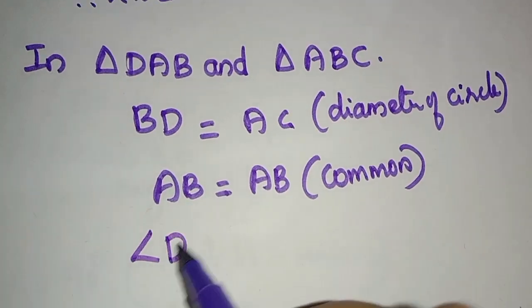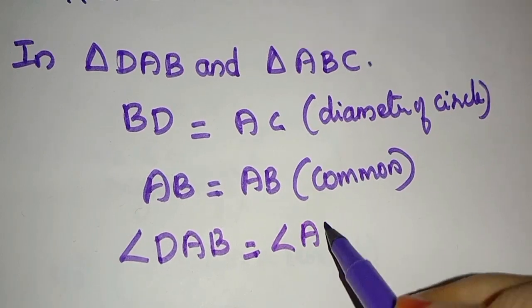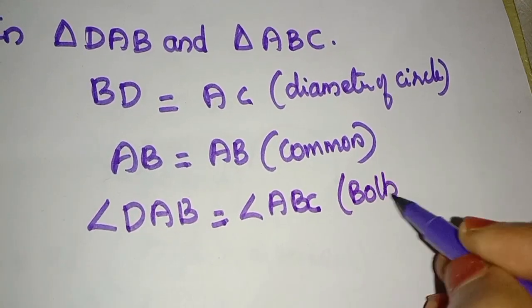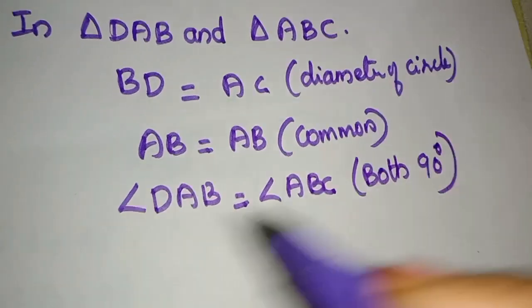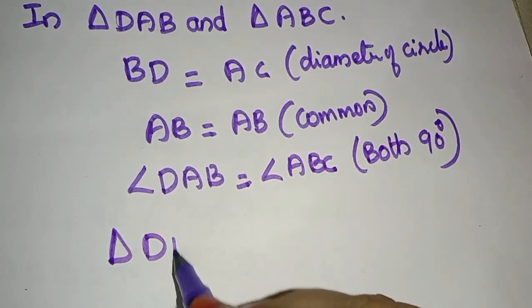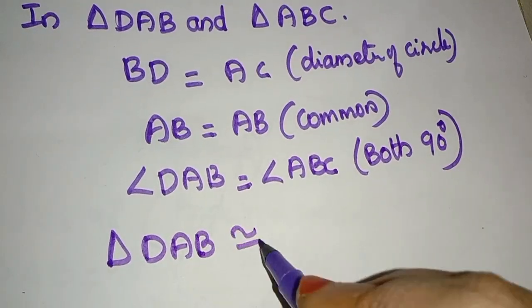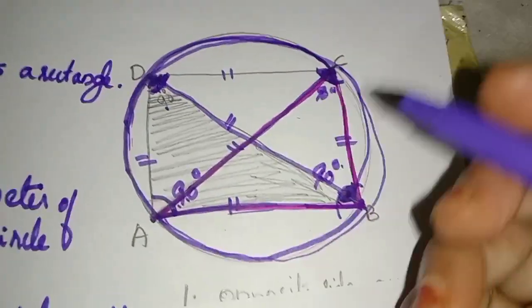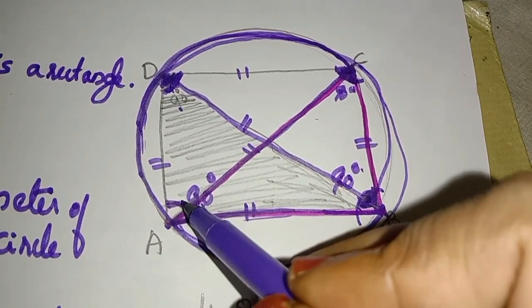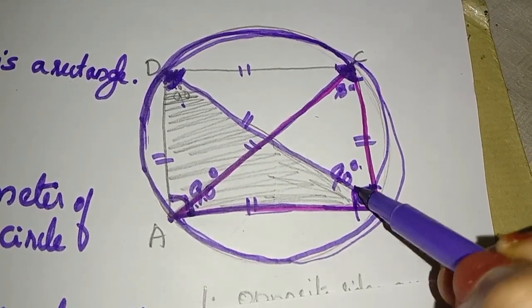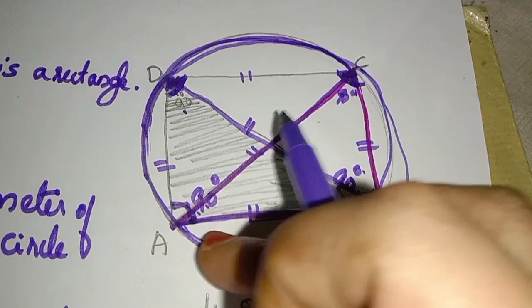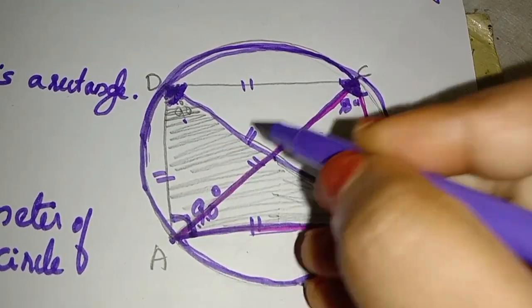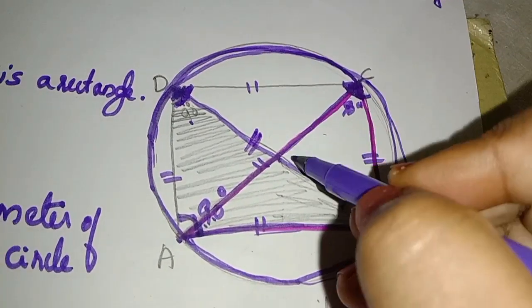Angle DAB is equal to angle ABC. Both angles are 90 degrees. So, we have three conditions. The two triangles are congruent. We have angle 90 degrees on the opposite side, which is the hypotenuse.